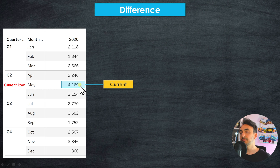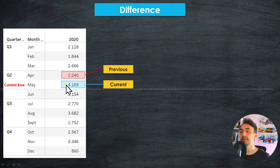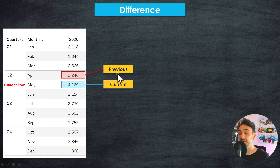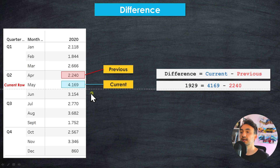The second data point is where we have more freedom — we select which value is compared to the current value. In Tableau we have four different options. The first option is to compare the current month with the previous month, so in this example we compare May with April. Tableau will simply find the difference by subtracting those two values.